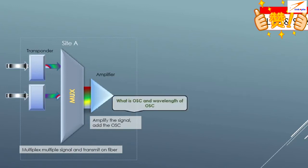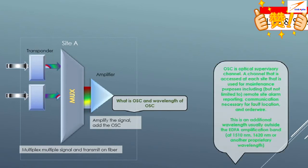The next question may ask: what is OSC and what is the wavelength of OSC? OSC is the optical supervisory channel and is used for maintenance purposes, including remote site alarm reporting and communication necessary for fault location. We use an out-of-C-band wavelength for OSC. Some manufacturers use 1510 nanometers, some use 1620 nanometers, or another appropriate wavelength.